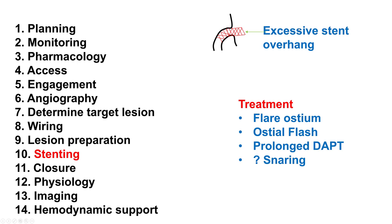If there is excessive stent overhang, usually nothing much is done — the ostium is flared, or the Osteal Fluss balloon is used. Some people give prolonged DAPT given the stent struts being out in the aorta. If there is excessive overhang, sometimes people will snare and pull the stent, but that obviously carries the risk of causing disruption of the vessel and dissection.